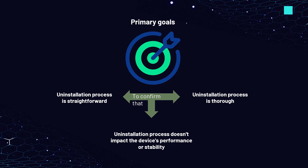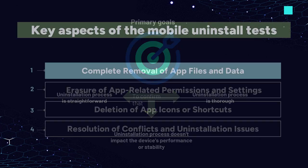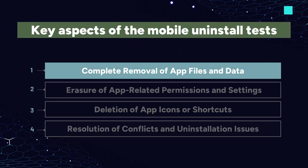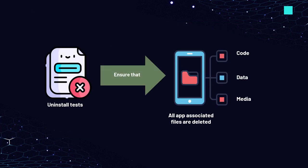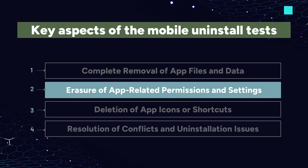Key aspects tested during mobile uninstall tests include: first, complete removal of app files and data. Uninstall tests ensure that when the app is removed from the mobile device, all associated files — including code, data, and media — are thoroughly deleted. This prevents any leftover remnants that might consume storage space or cause conflicts with future installations.